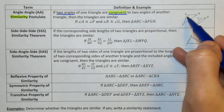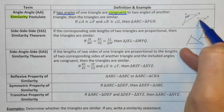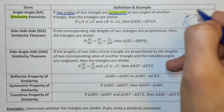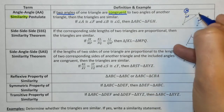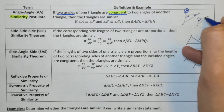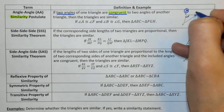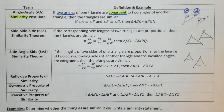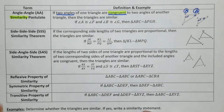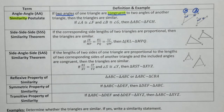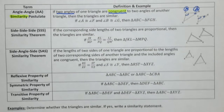In this example, we have that angle A and angle F are congruent, so we have an angle, and then angle B and angle G are congruent, which gives us our second angle. Based on our third angle theorem, our third angles will automatically be congruent. So this is your angle-angle similarity. All you need are two angles that are congruent, your third angle is automatically congruent, and you have similar triangles.